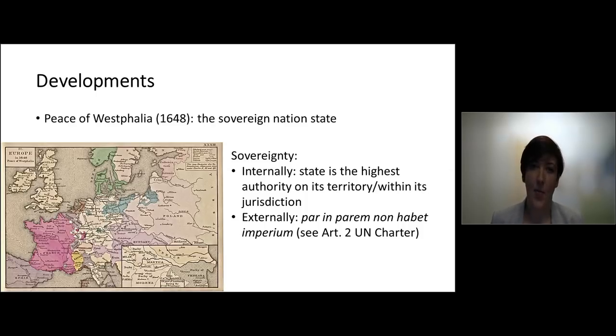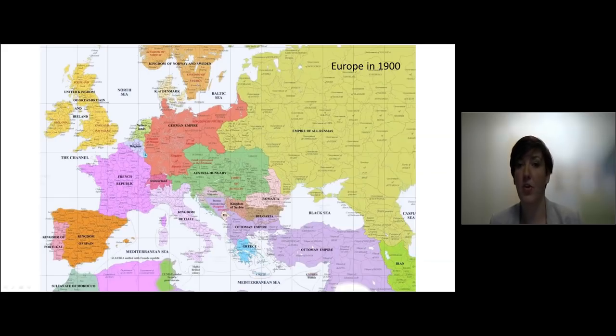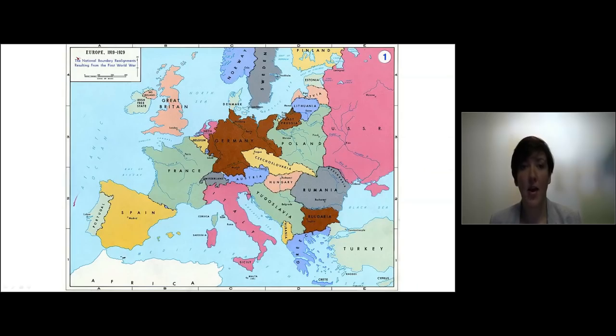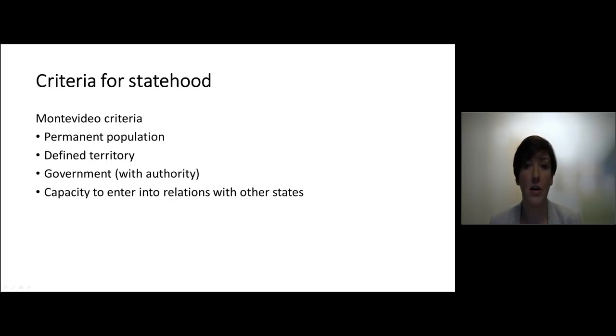States did not stay the same over all these years. Over all time the boundaries between states, the borders, changed and were different. And these developments continued throughout time. So what then makes a state? In this course we use the criteria of the Montevideo Convention, so the Montevideo criteria. And these criteria are to have a permanent population, a defined territory, a government with authority and the capacity to enter into relations with other states. We will now look at these criteria more closely.